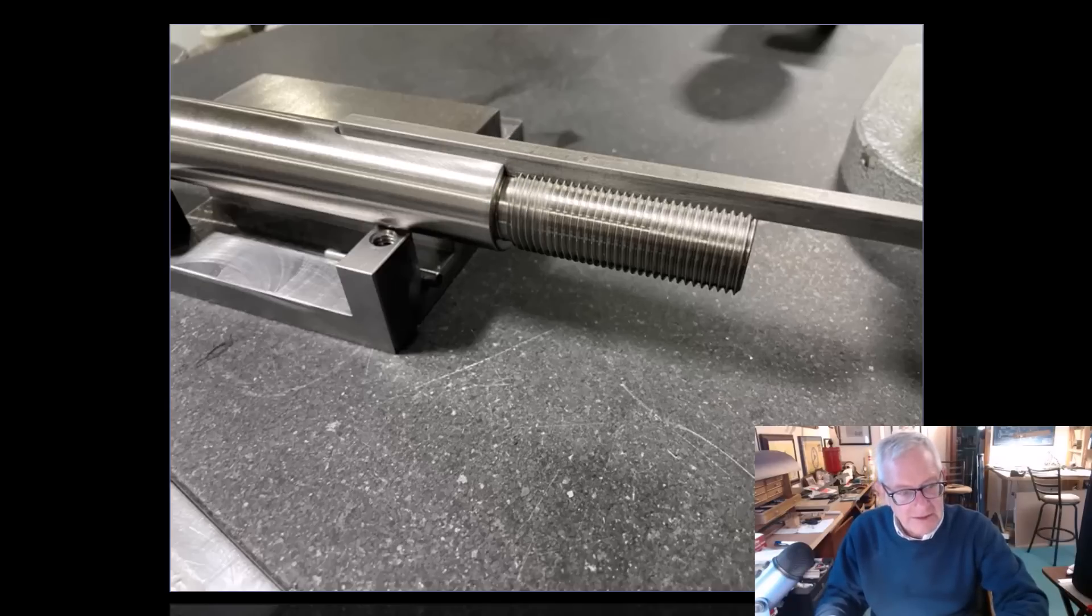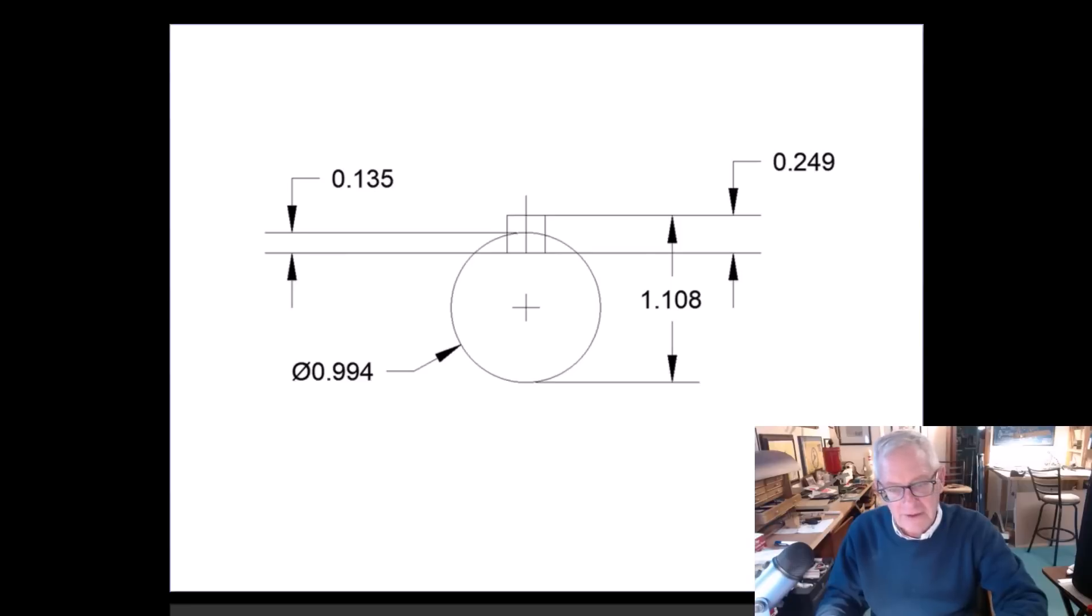So let's move along. Simple calculation: there's my 994 diameter shaft, there's my 135 thousandths depth, there's my 249 thousandths keystock, one inch 108. I have three thousandths on this. The 135 could go to 138 if I choose to make it three thousandths deeper. That's going to reduce that to one inch 105.